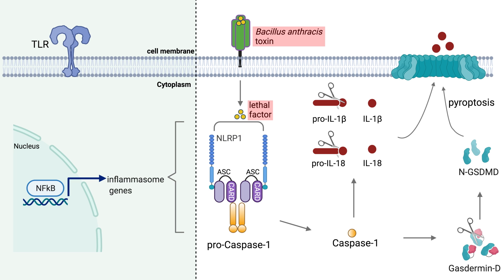The NLRP1 inflammasome is activated when the NLRP1 sensor is cleaved by Bacillus anthracis lethal toxin, which is one of the components of anthrax toxin. Certain alleles of NLRP1 in rodents can also respond to infection with the protozoan parasite Toxoplasma gondii.